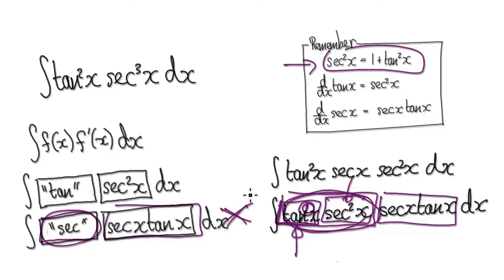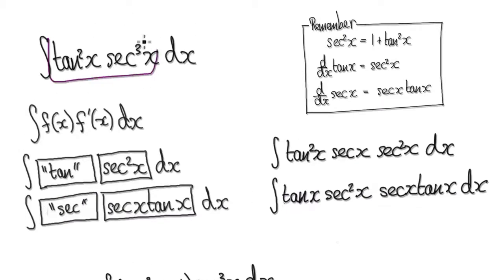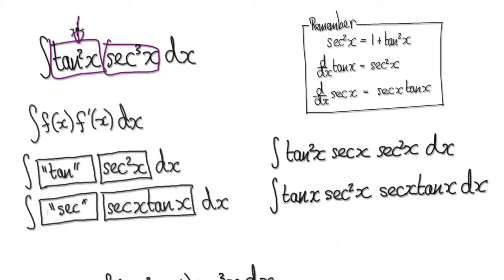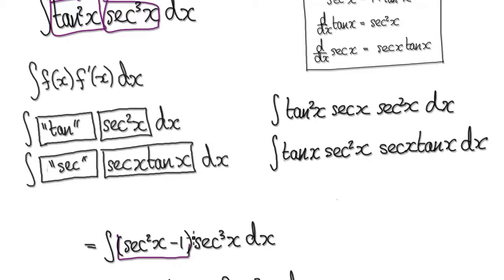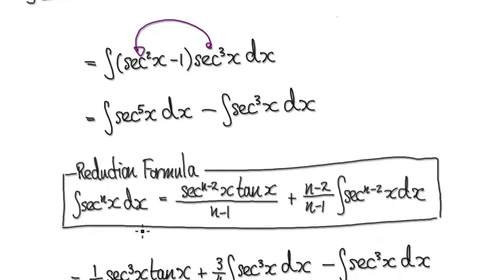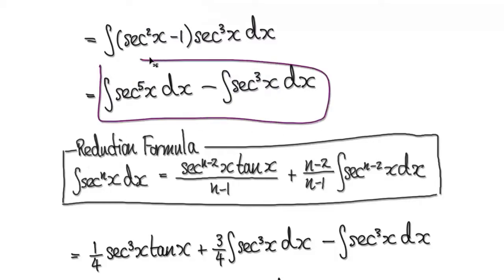So we've got no choice but to use a reduction formula. Going back to here, we know we have to use a reduction formula. Turn everything into a block of secant. This is tan squared, so we can turn this block into a block of secant using the identity: tan squared equals secant squared minus 1. So multiplying this out, this times this gives secant to the power of 5, and this times this gives secant to the power of 3. Now everything is in terms of secant and we can use a reduction formula.